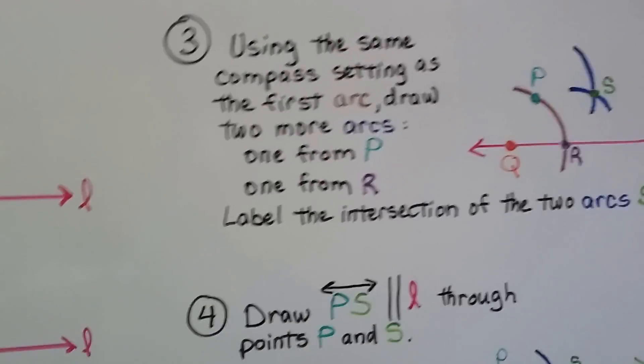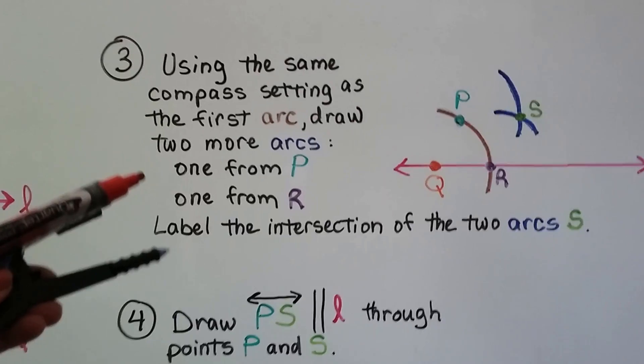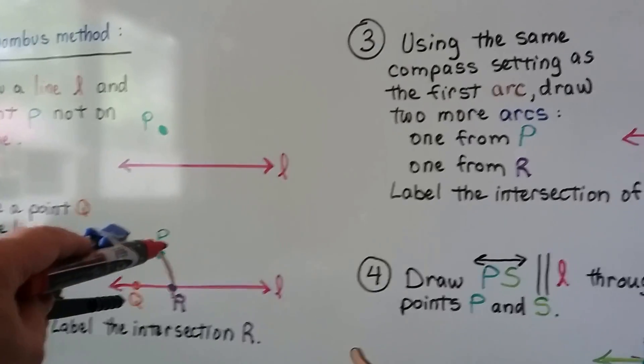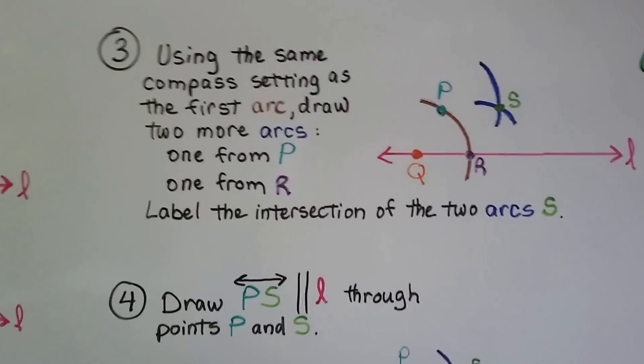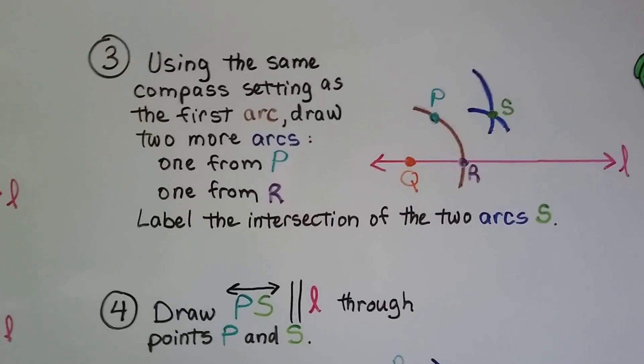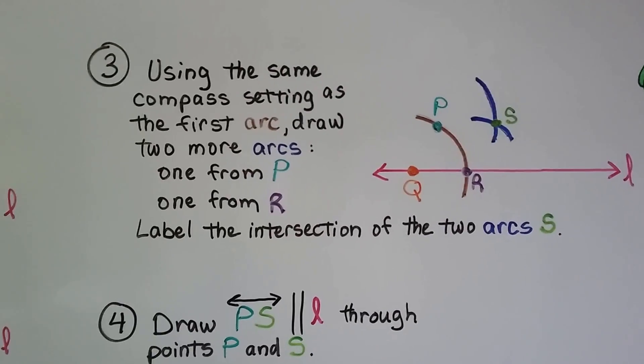The next thing we do is use the same compass setting. We don't squeeze it or open it any more than what it was set for this one. We use the same compass setting as the first arc and draw two more arcs, one from P and one from R.